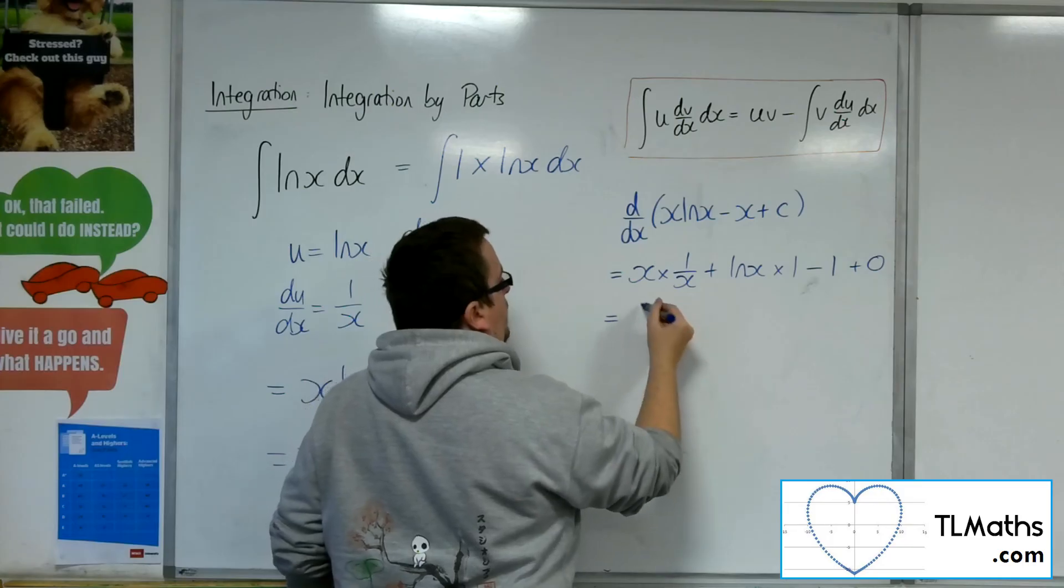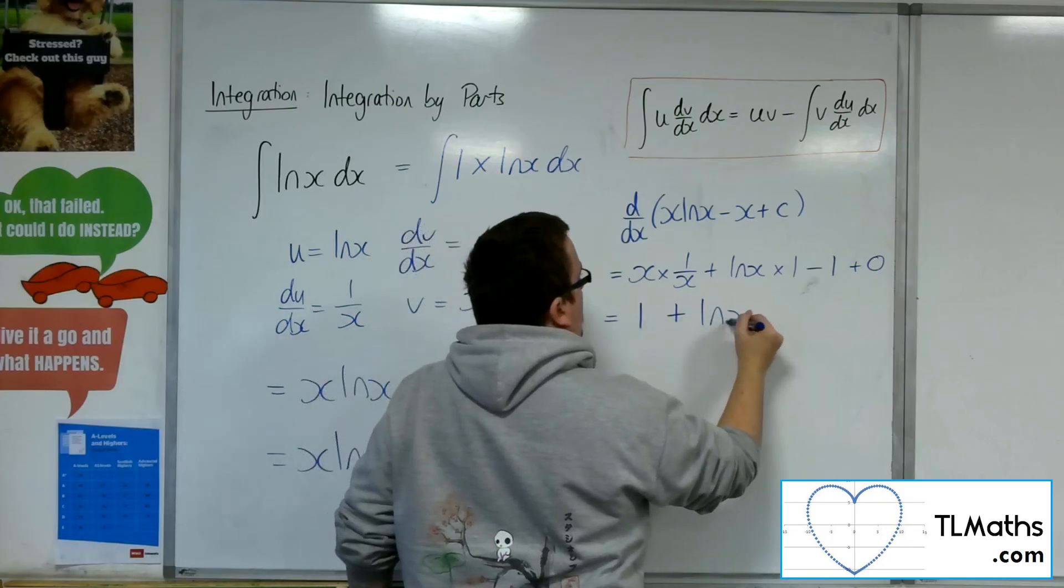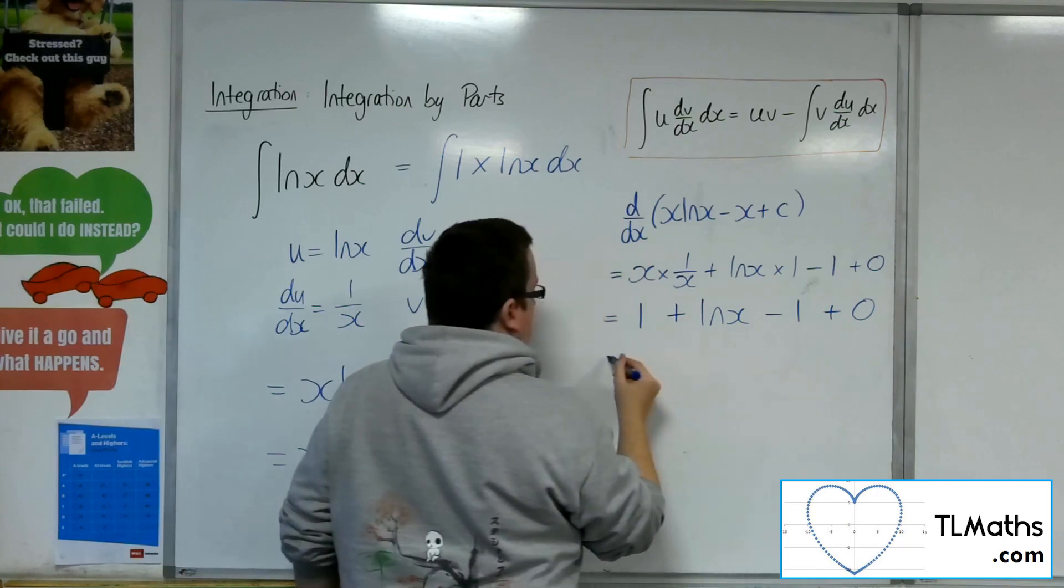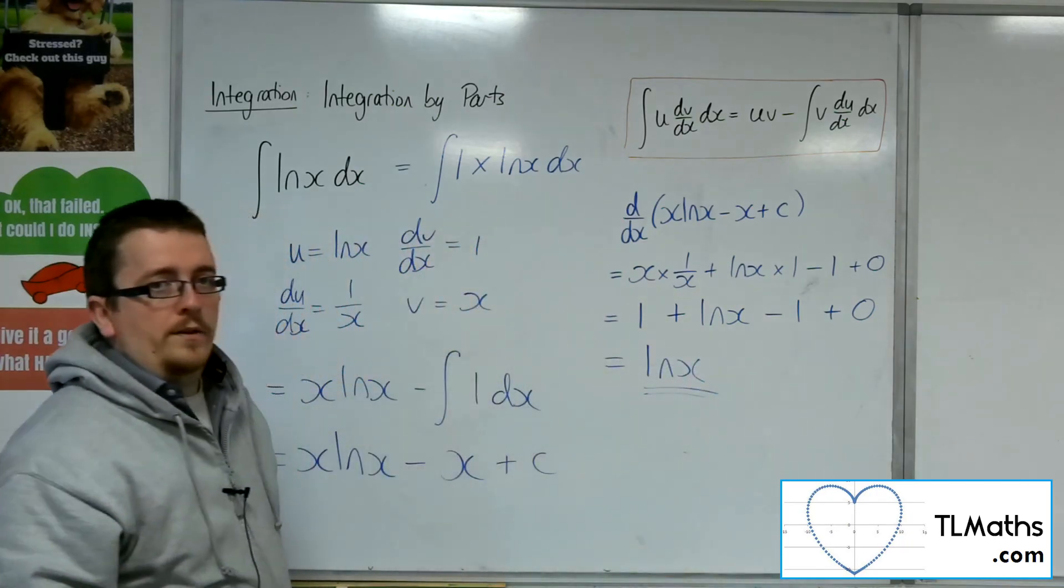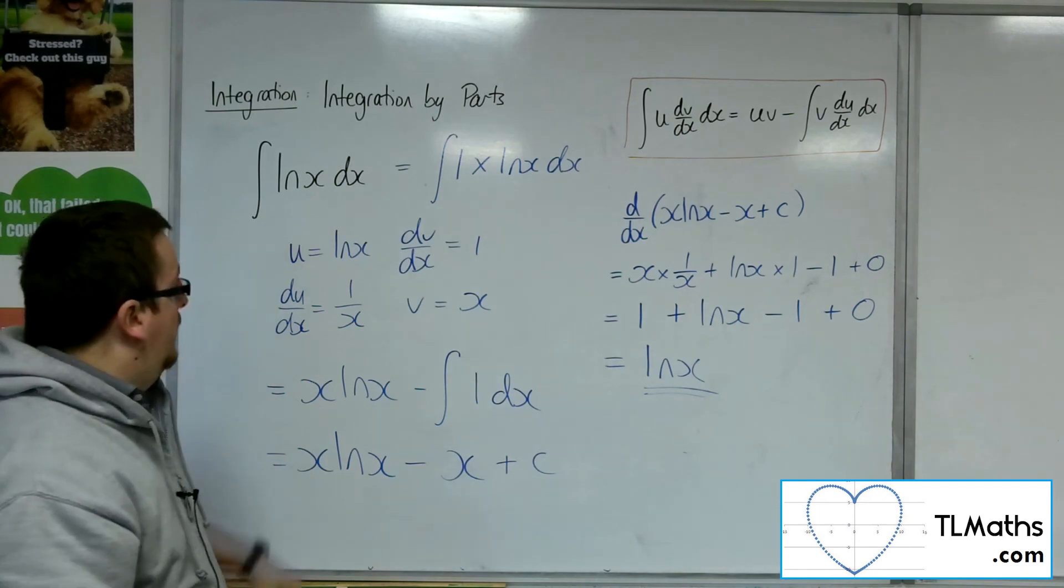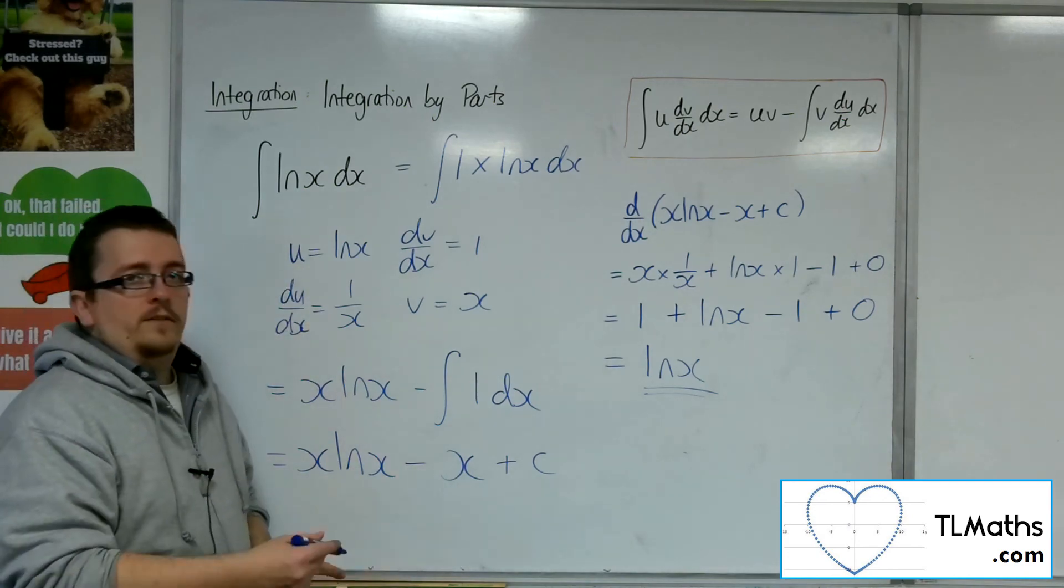x times 1 over x is 1, plus log x, take away 1, plus 0, and so that just leaves you with log x as required. So it does differentiate to log x, so log x must integrate to this.